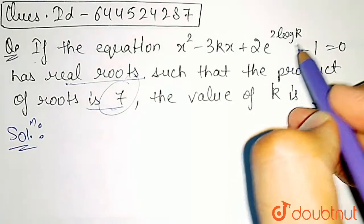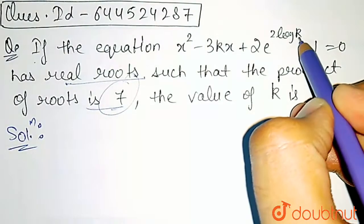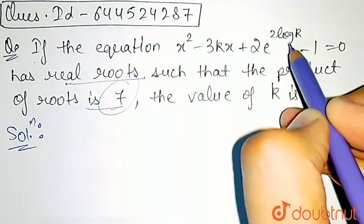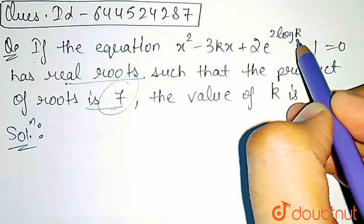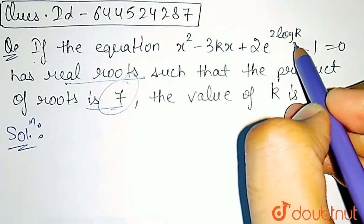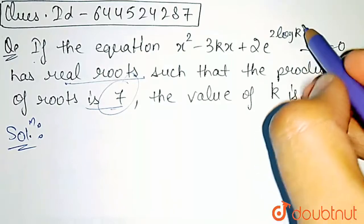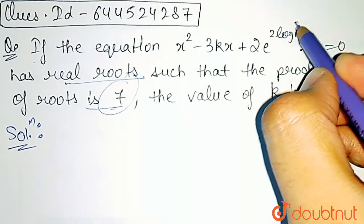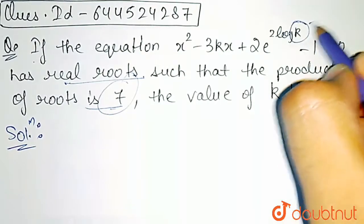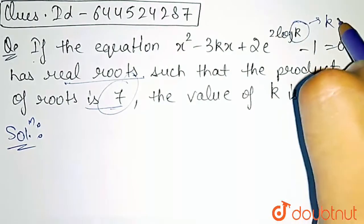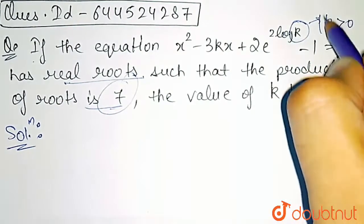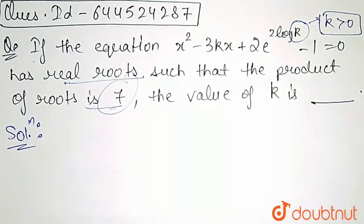First of all, from here, we can say that k is the input of log and log's input cannot be negative. So the first inference we get is that k should be positive.